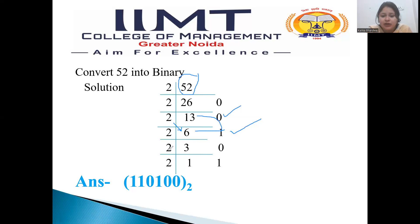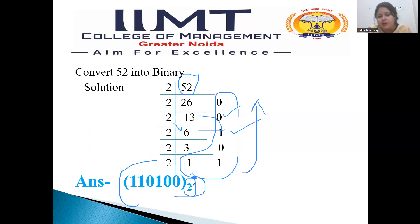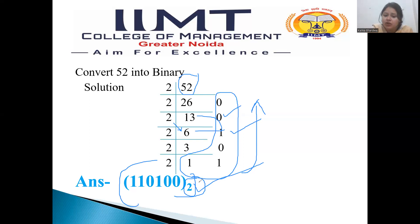Then we will divide 3 by 2 — it will go 1 time and the remainder will be 1. Now, in binary conversion, we write the answer from downward to upward. So the answer is 1, 1, 0, 1, 0, 0. This shows it is a binary number, so the base 2 is written. If the base is not written, it will be considered as a decimal number only. It is mandatory to write the base so anyone can understand whether it is binary, octal, or hexadecimal. In binary, base 2; in octal, base 8; in hexadecimal, base 16.